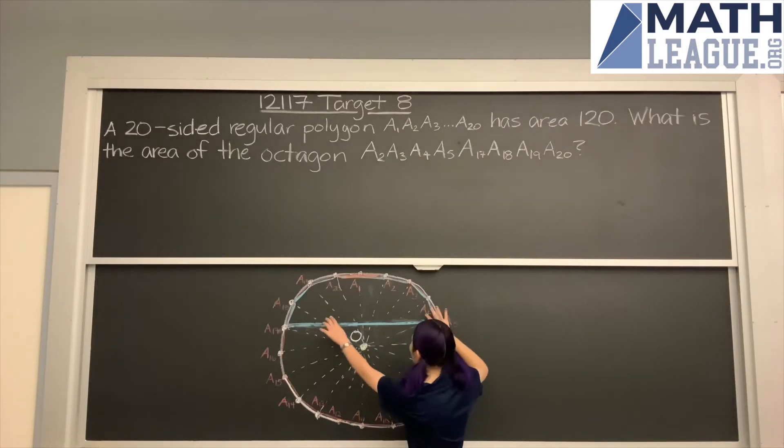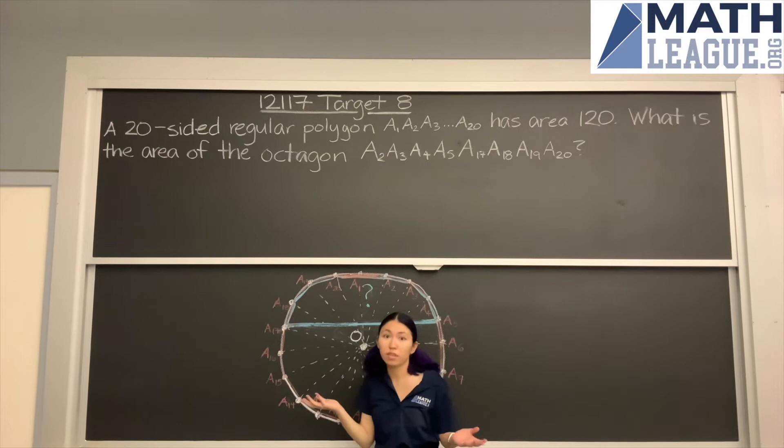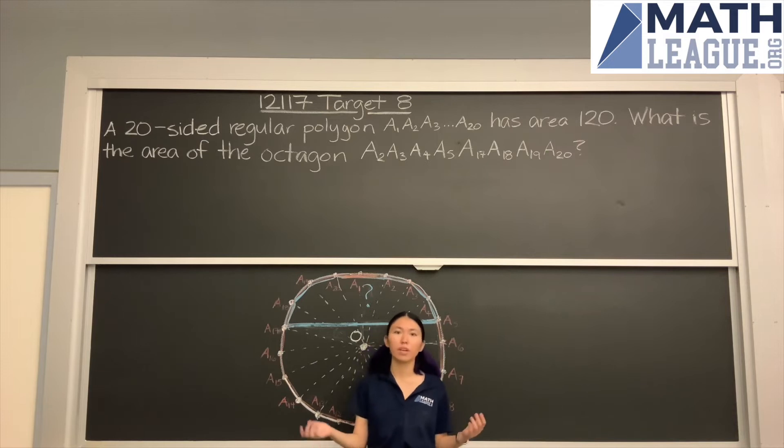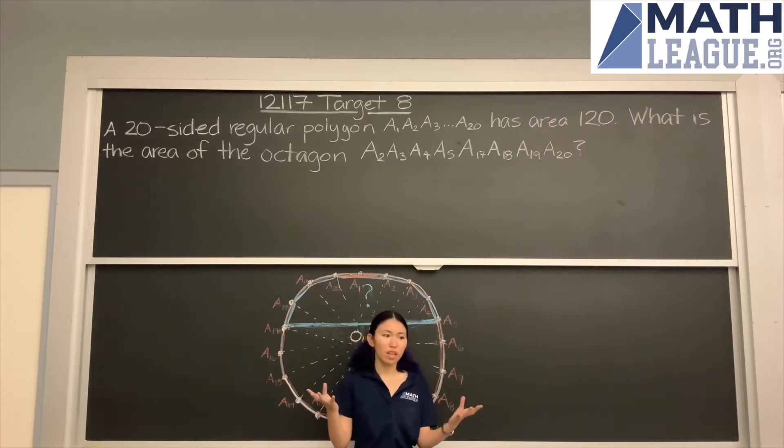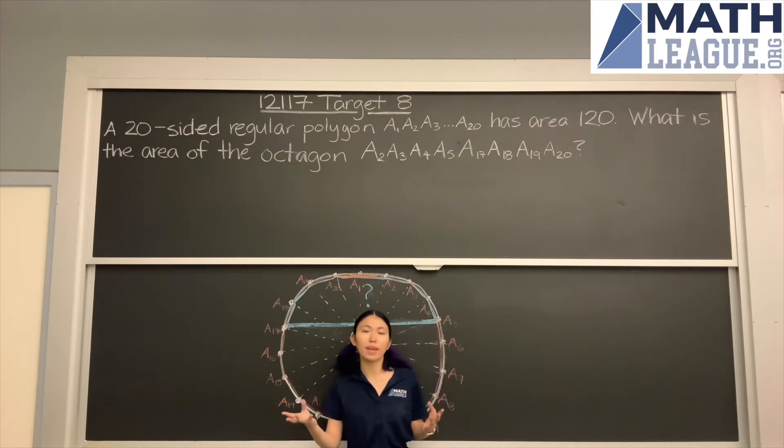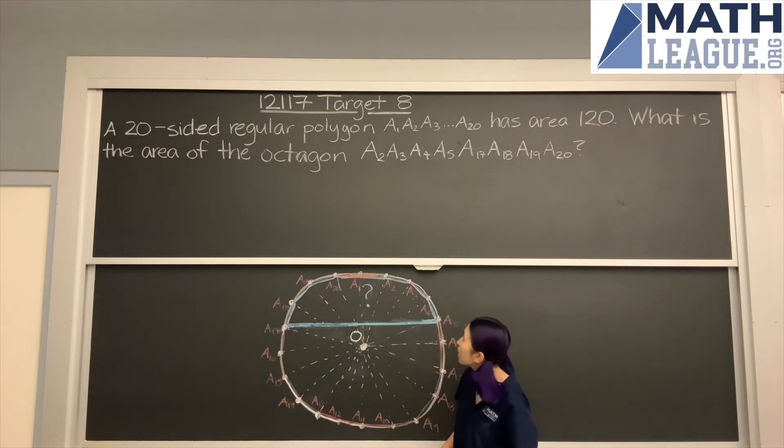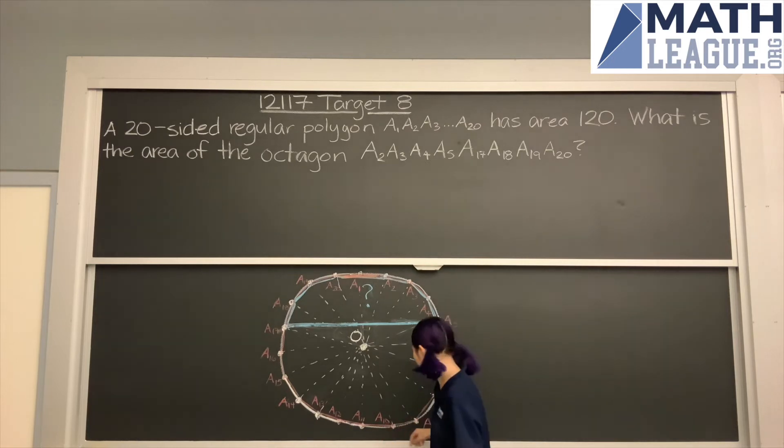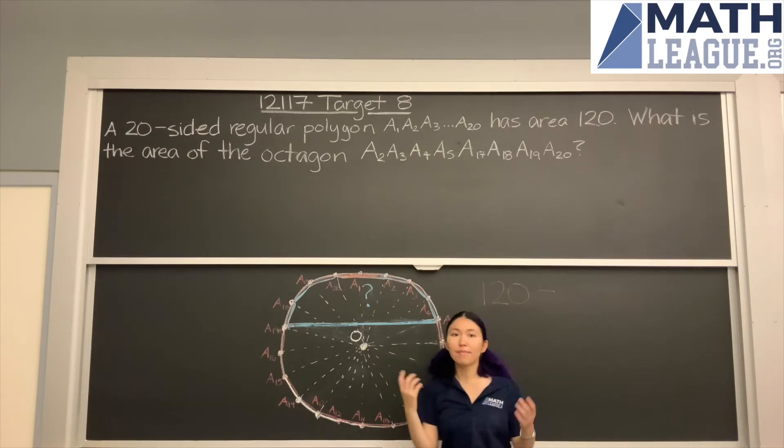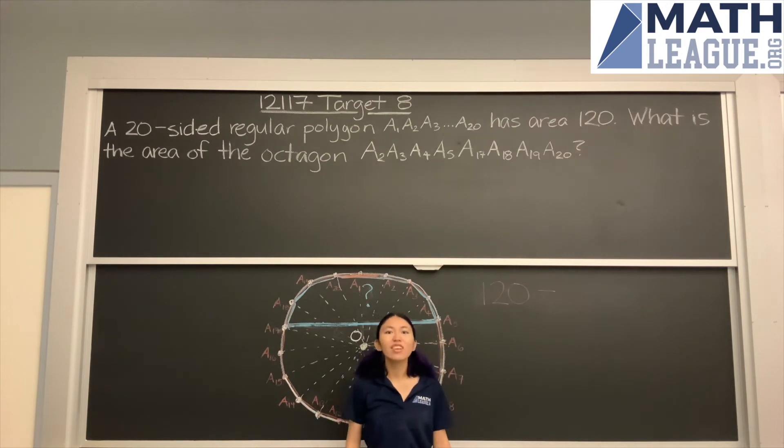So how are we going to find the area of this blue thing? One thing you might remember from combinatorics problems is something called complementary counting, which is, for instance, we want to find some sort of probability, and we realize that it's easier to find the probability of the thing that we don't want, and then we do 1 minus that to find the probability that we actually want. We're going to do something similar here. We know that this whole 20-sided polygon has area 120, so we can just go through and do 120 minus everything that's not part of the octagon, and find the area of the octagon in that way. So let's do it.